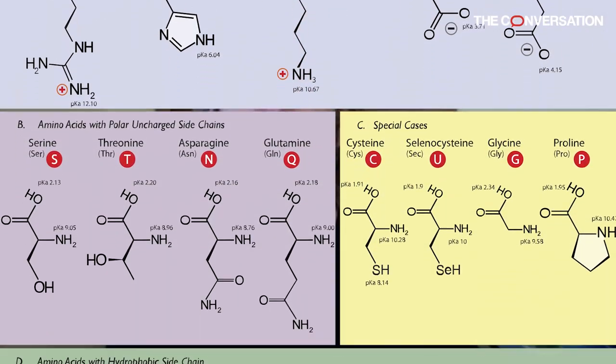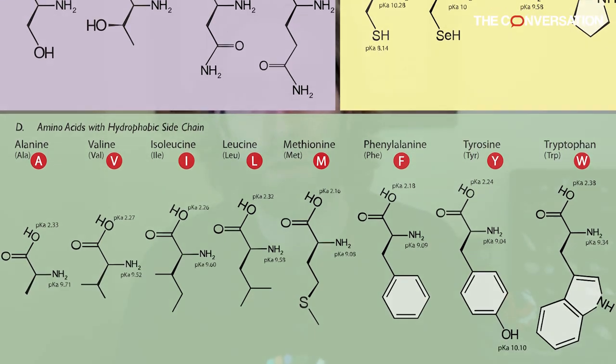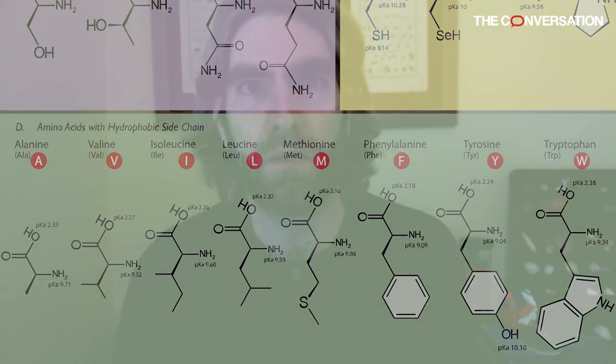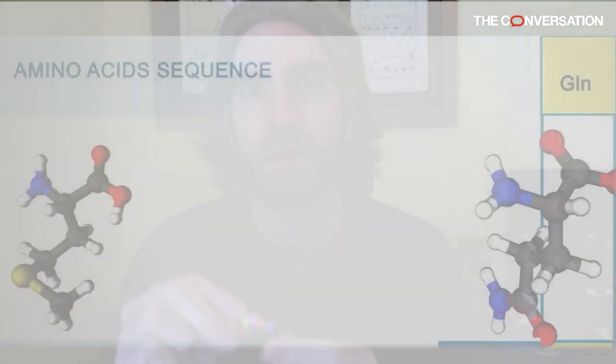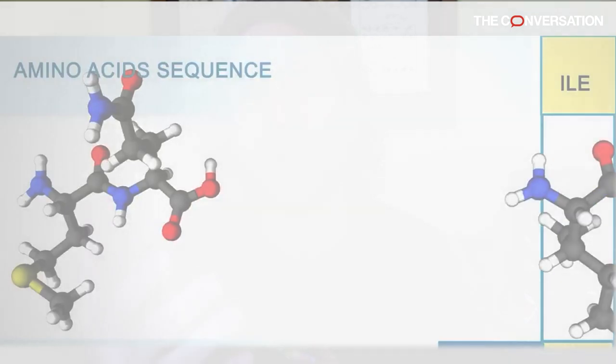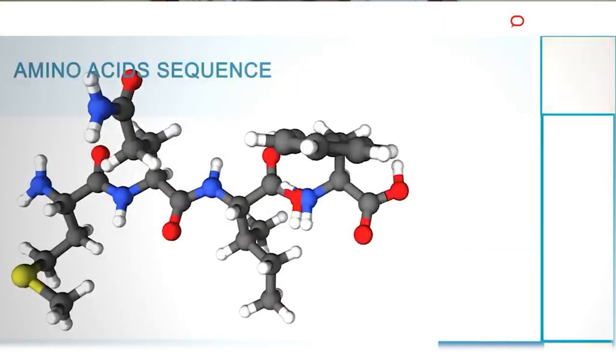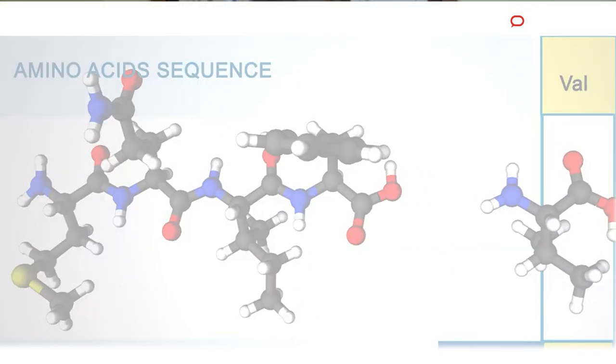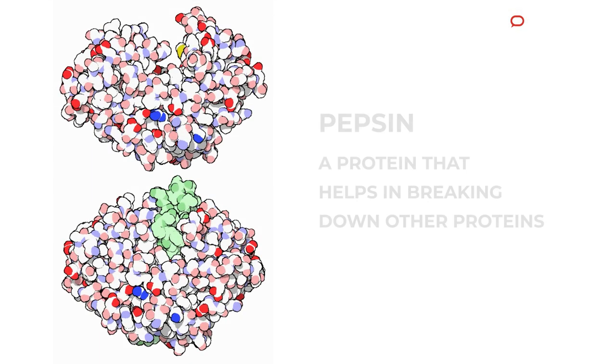The amino acids in our body come from the food that we eat, and we also make some ourselves. Other animals make proteins, so we eat those, take them in, and break that chain down into individual amino acids. Then we can rebuild them in any combination we want. It turns out we can make about half of our amino acids on our own, but the other half we have to get from our food.